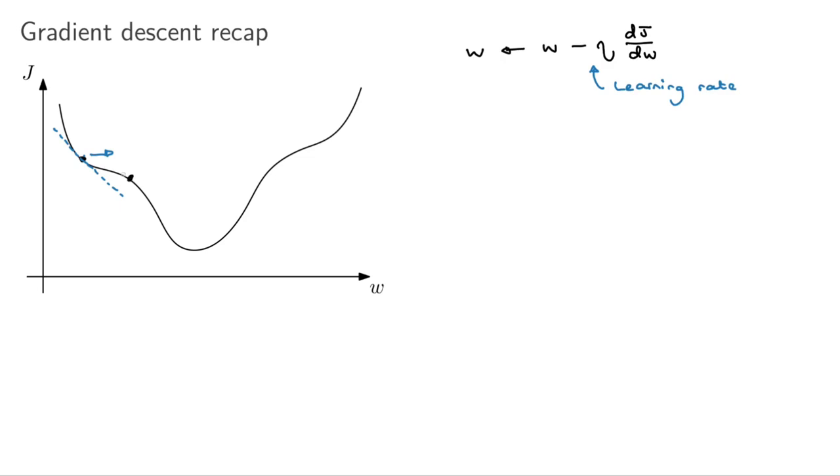Now we again calculate the slope and maybe it looks like this. Still negative, not as much as before. And we take negative, negative. The learning rate is positive. So we take another positive step. And in this way, the idea is to basically go down and down and down the hill as you go, as you're updating your W repeatedly.